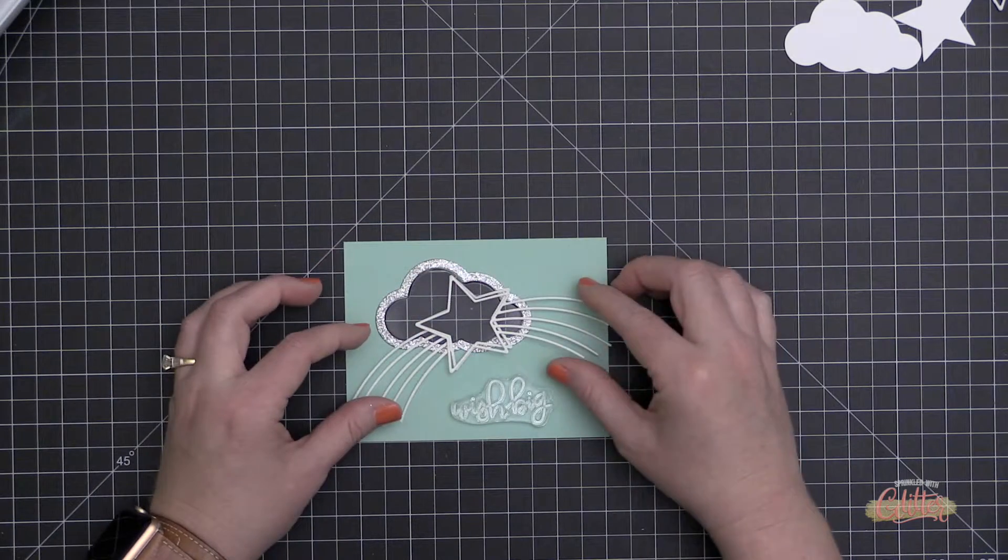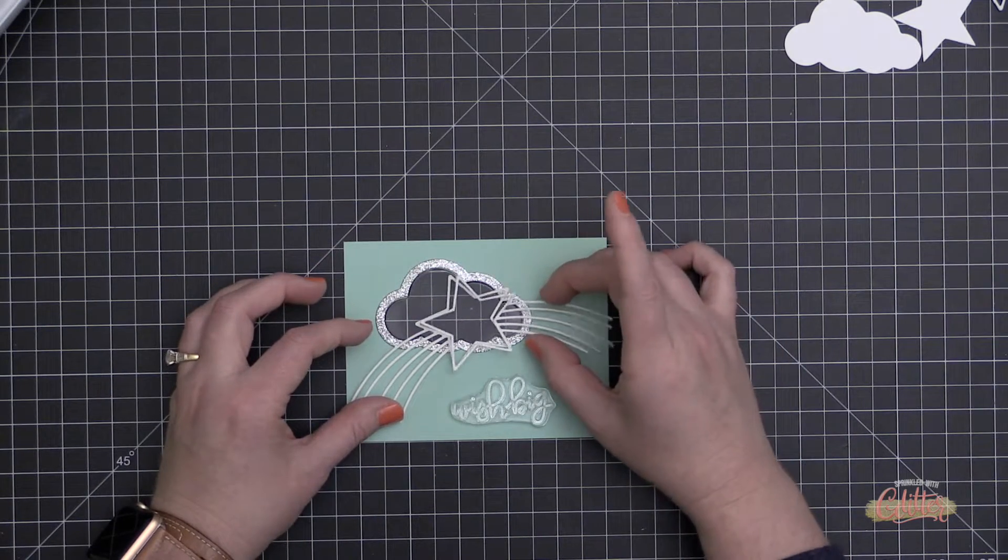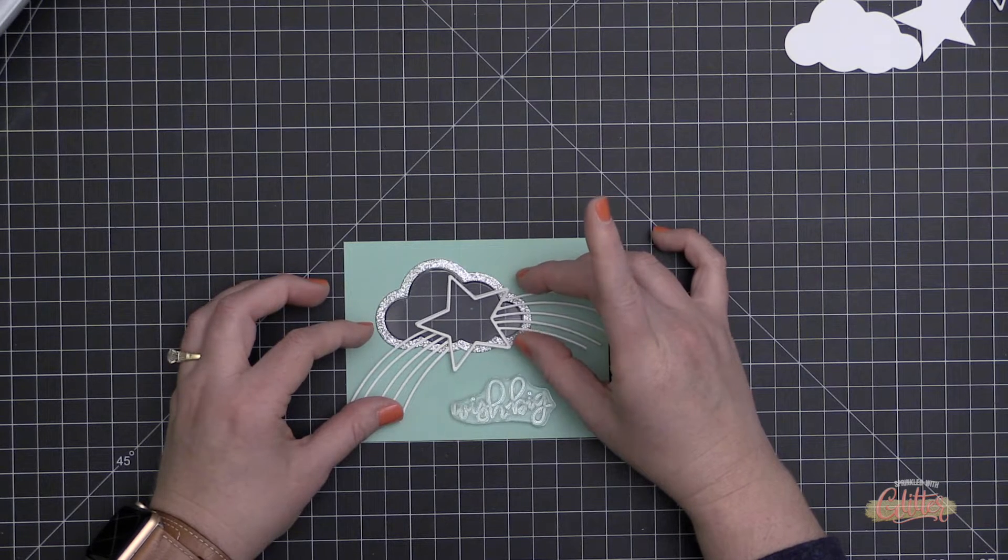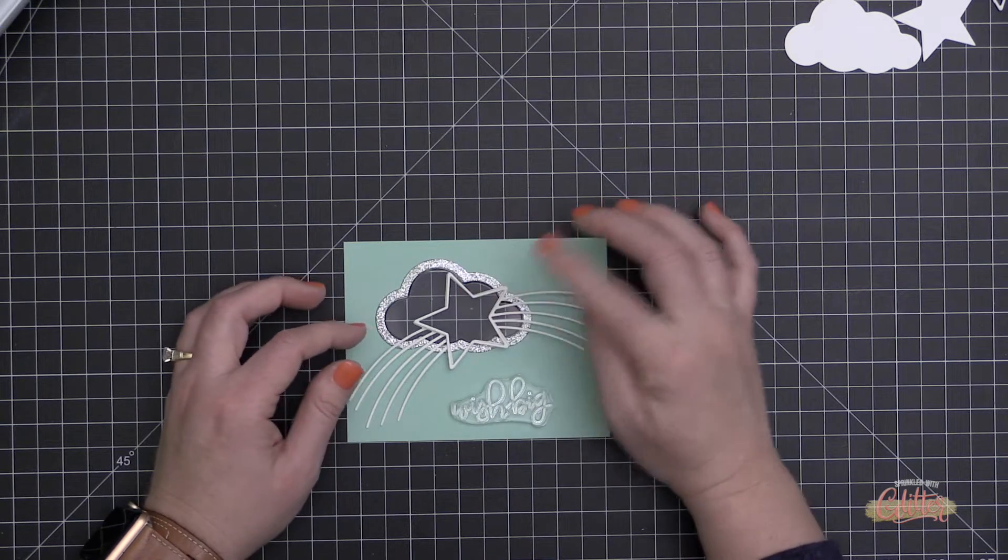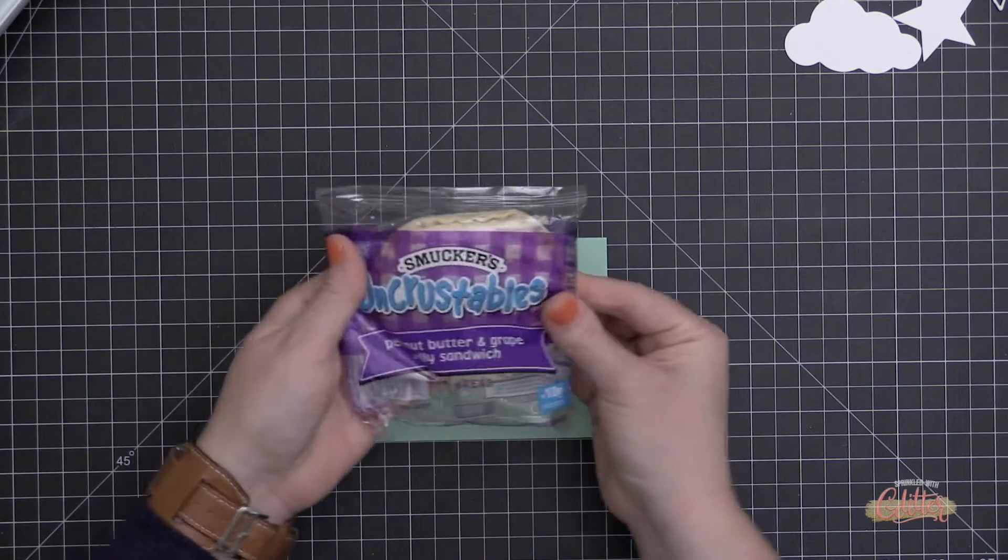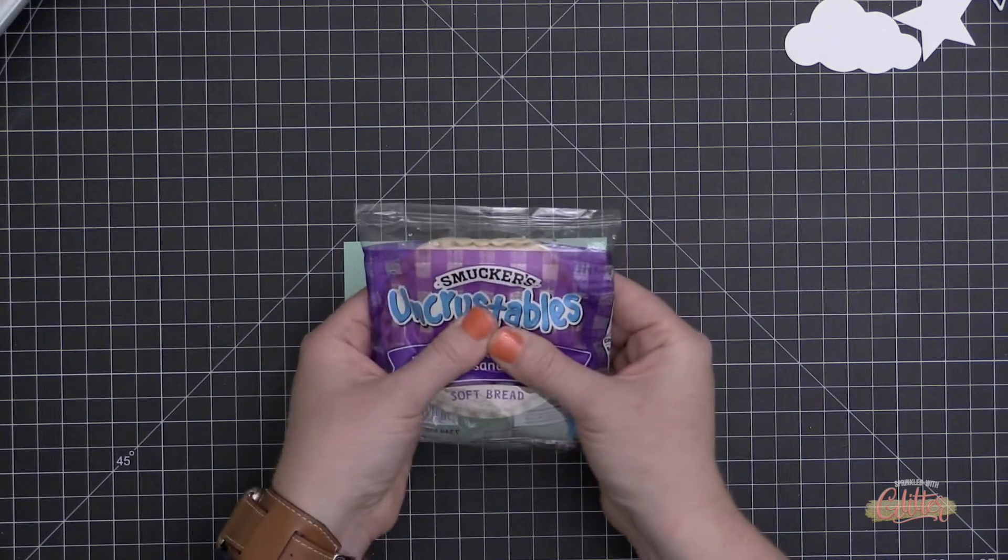I love all of these different shapes that they have that make shaker cards so easy, because it takes kind of the guesswork out. Since this kind of pops out, I don't have to think about how many layers of foam tape that I need. It just makes it easy and quick and kind of a no-brainer to create shaker cards with these My Favorite Things products.